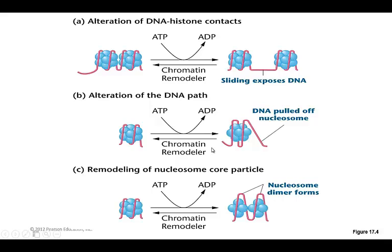You can also remodel the nucleosome core particle itself. Instead of the full eight subunits — four and four — you can form a dimer, so it is just a little more loosely associated with that particular region.